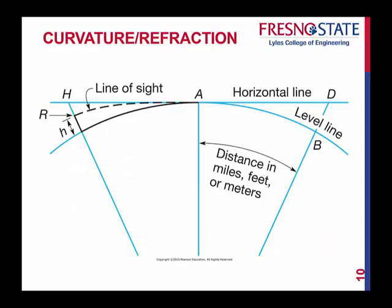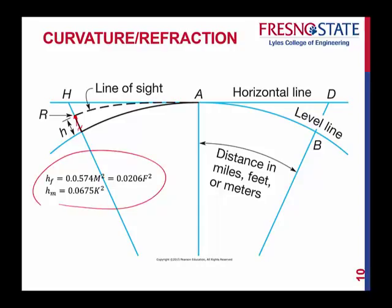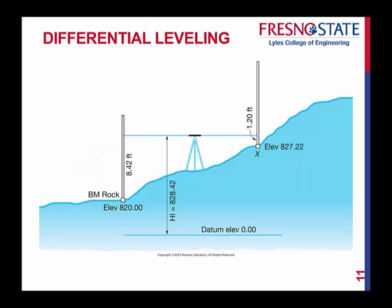Taking both into account, we end up with new combined equations. Since curvature is a positive correction and refraction is a negative correction, the overall combined correction equations account for both. Again, M is in miles, F is in thousands of feet, and K is in kilometers. That all happens due to the topic of differential leveling.